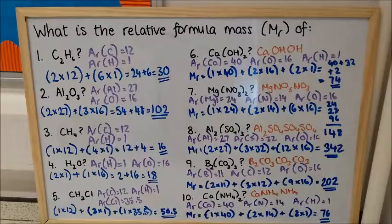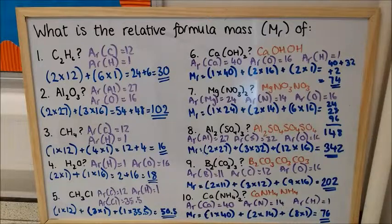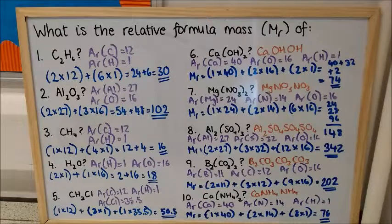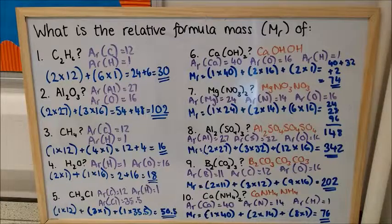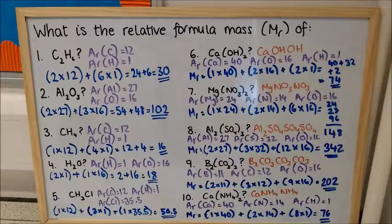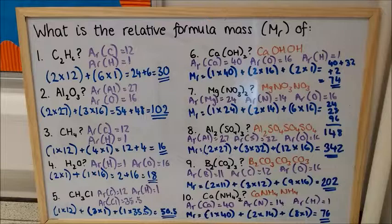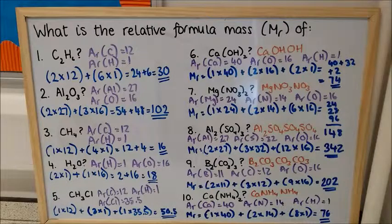Hopefully now, if you check your answers for the last three, you're also going to have 342, 202, and 76. And I expect you can now also see why it's quite so important to write the calculation out in full, because it's really, really easy to lose your way in one of those.